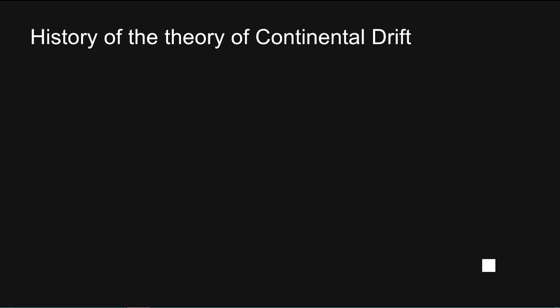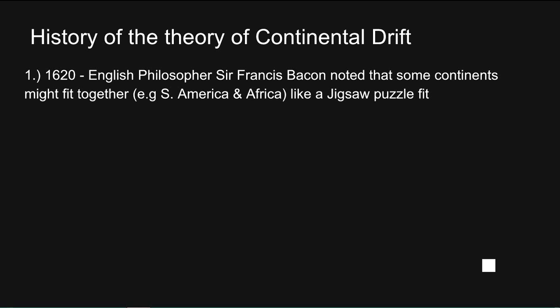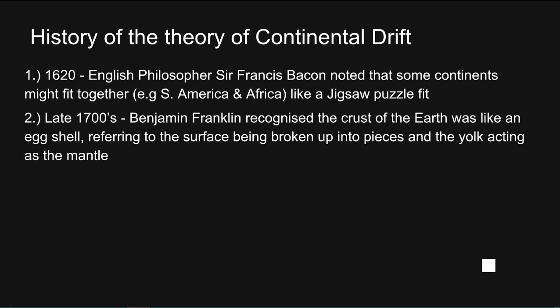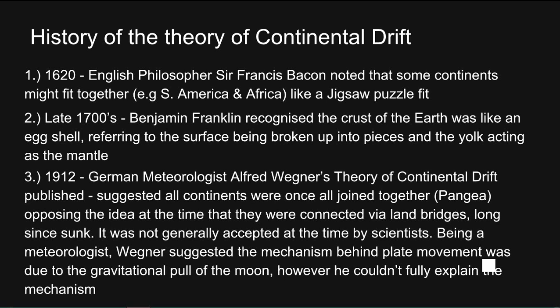The history of the theory of continental drift: in 1620, English philosopher Sir Francis Bacon noted that the continents might fit together — for example, South America and Africa — just like a jigsaw puzzle. In the late 1700s, Benjamin Franklin recognised the crust of the Earth was like an eggshell, with the surface broken up into pieces and the yolk acting as the mantle. In 1912, German meteorologist Alfred Wegener's theory of continental drift was published. He suggested that all continents were once joined together as Pangaea, a supercontinent, opposing the idea that they were connected via land bridges long since sunk. It was not generally accepted at the time. Wegener suggested the mechanism behind plate movement was due to the gravitational pull of the moon, though he couldn't fully explain it.